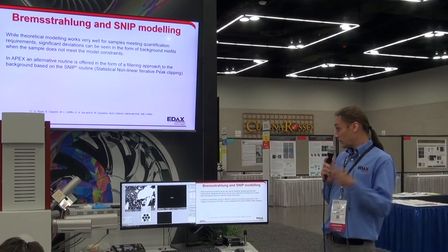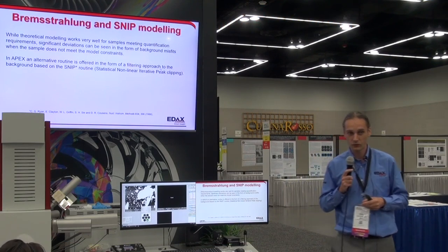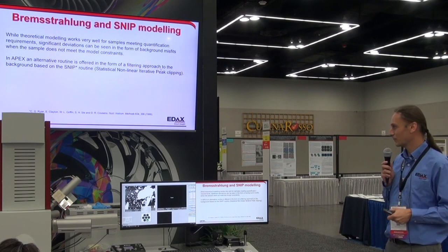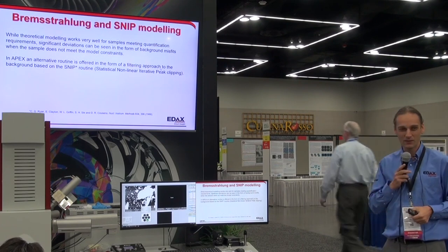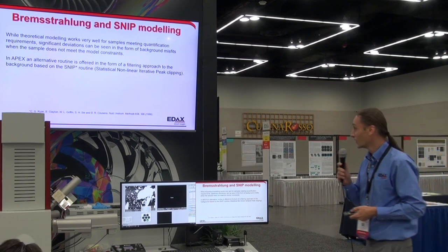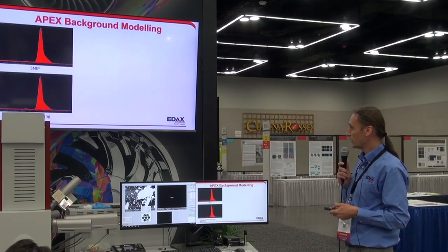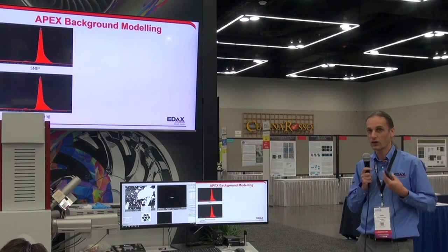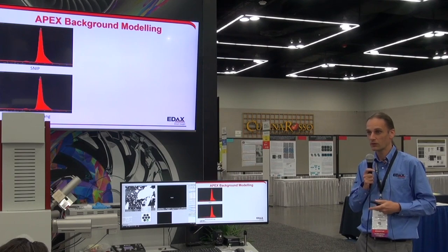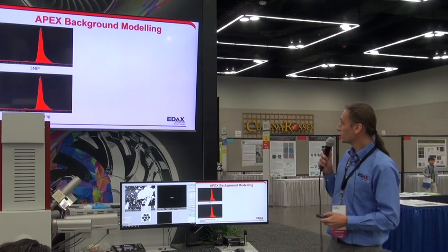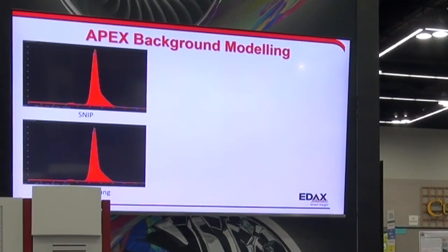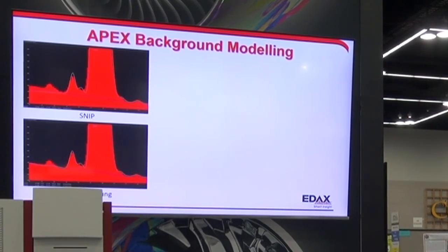In the APEX software we also have an alternative background routine called the SNP filter — Statistical Non-linear iterative Peak clipping. That's not a marketing term; the original paper actually uses that acronym. What it does is apply a math filter on top of the background rather than a physics-based modeling approach. Looking at a molybdenum sulfide sample, there's not much to see between the SNP and the Bremsstrahlung at first glance — you have to look at the details before you start to see the differences.